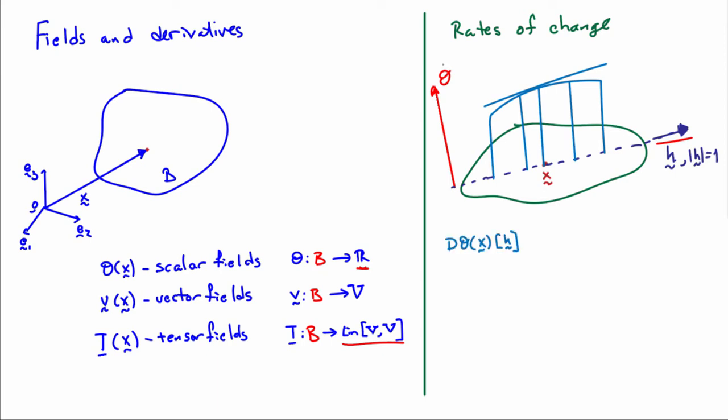So the notation that we'll use is d theta of x square bracket h. So h denotes the direction and x is the point at which we're computing the rate of change. And this whole quantity here is the rate of change.